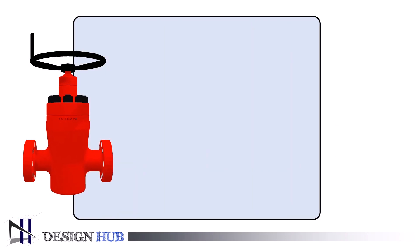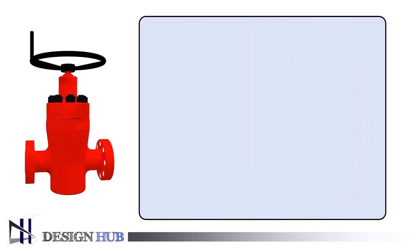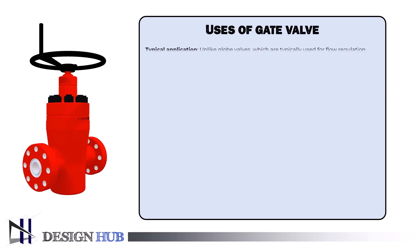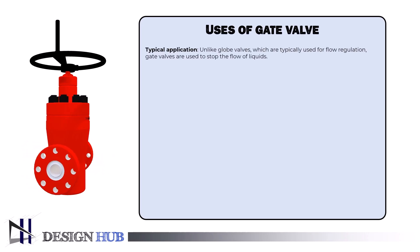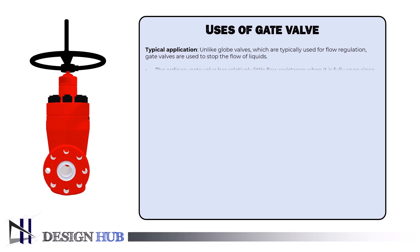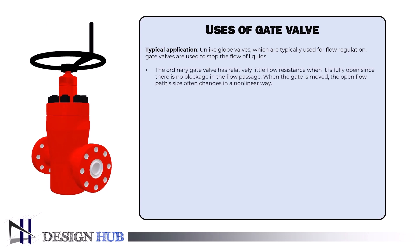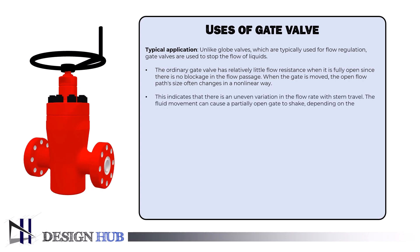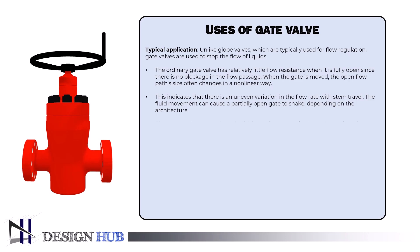Let's now examine the functions of a gate valve. Unlike globe valves, which are typically used for flow regulation, gate valves are used to stop the flow of liquids. The ordinary gate valve has relatively little flow resistance when fully open since there is no blockage in the flow passage. When the gate is moved, the open flow path's size often changes in a non-linear way, indicating an uneven variation in the flow rate with stem travel.